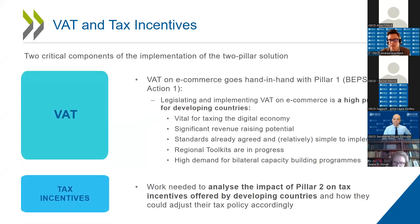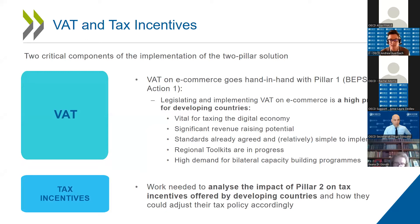On VAT on e-commerce — this is very important because it really goes hand in hand with Pillar 1. Our standard on VAT for e-commerce comes out of the Action 1 report from 2015. Many countries have already legislated it. It's vital for taxing the digital economy and countries have raised a lot of money through it. We have a lot of products, toolkits, and resources for countries to use and there is high demand. It's not a choice between Pillar 1 or VAT — you can have them both. Countries that don't have rules on VAT for e-commerce need to look at that.